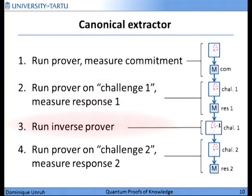Now we have challenge one and response one, and we want to give him challenge two and get response two. For this we need to rewind — we just do the inverse operation of what the prover does. The prover does something on challenge one, we do the inverse. This can be efficiently applied and, at least intuitively, would bring us back to the state before challenge one was given. And finally, we now run the prover on challenge two and get response two. Hopefully this gives us two responses to two different challenges.